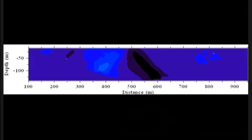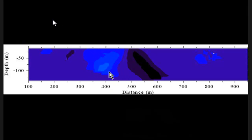The light blue area is now most promising where the cursor is. This anomaly may develop into an aquifer system. There are other anomalies to the right and to the left.